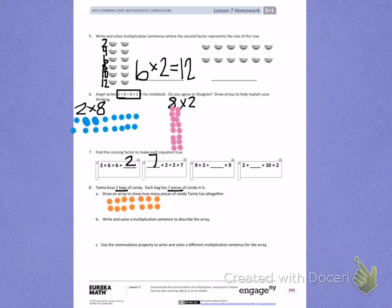Letter B. Write and solve a multiplication sentence to describe the array. Look at the picture to write the groups times the size, which will give you the total.